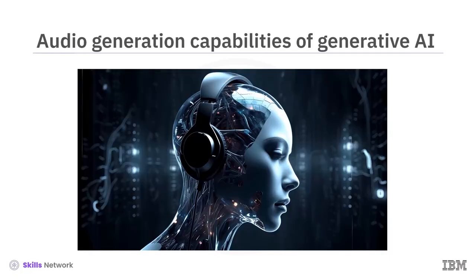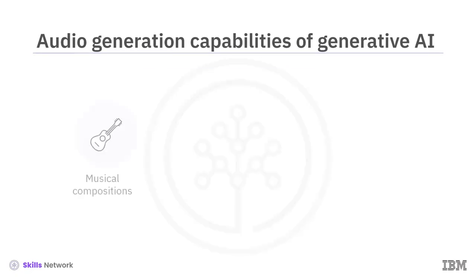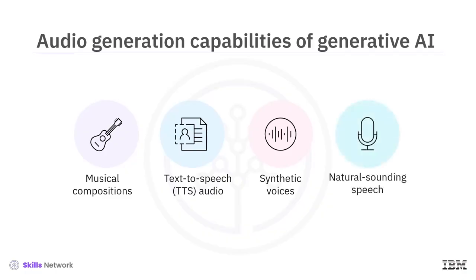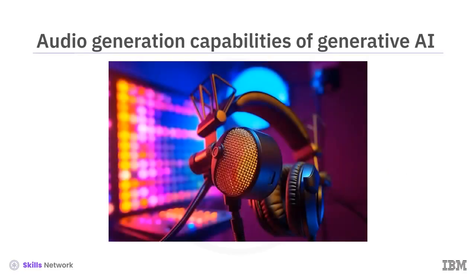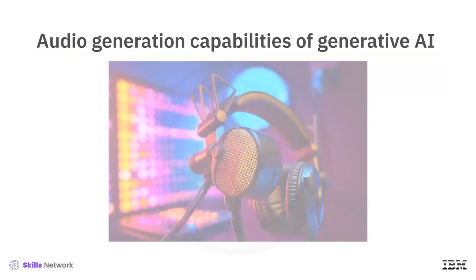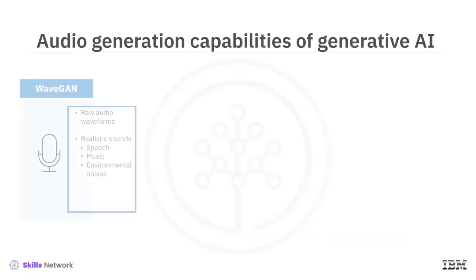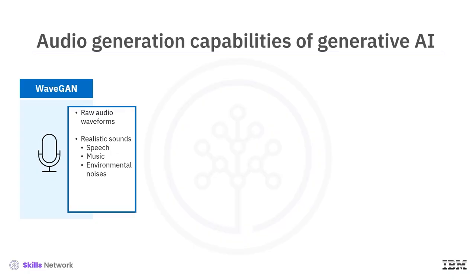In the context of audio generation, generative models can generate new musical compositions, convert text into audio using text-to-speech, or TTS, and create synthetic voices and natural-sounding speech. Generative models can convert, modify, transform, and clean up voices, reduce noise, and enhance audio quality. These models also have the capability to mimic human voice to a fair amount of likeness. WaveGAN, for example, can create new and realistic raw audio waveforms, including speech, music, and natural sounds.